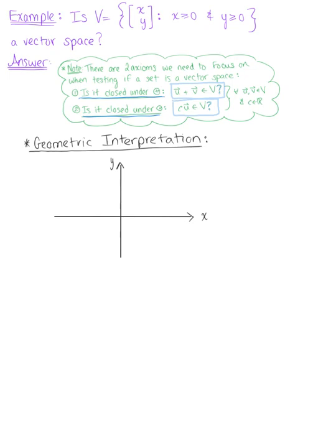So the first thing we're asking ourselves is, what exactly are we testing here? It can be helpful with sets like this to think about your geometric interpretation. So looking at our given set, we know that x must be greater than or equal to 0, so we're thinking about the right-hand side of the x-axis. And then we also know that y must be greater than or equal to 0, so we're thinking about the top portion of your y-axis.